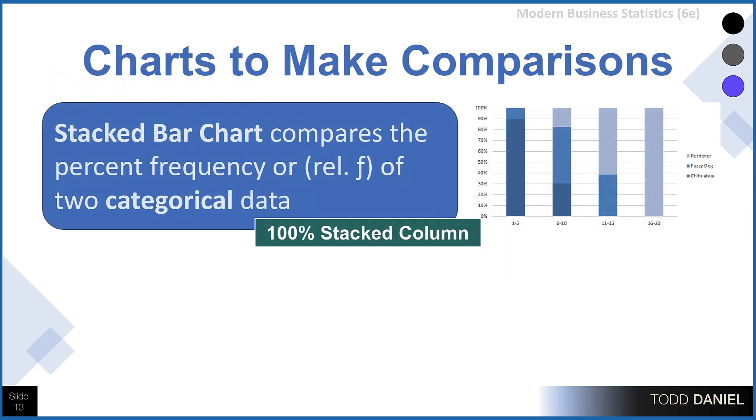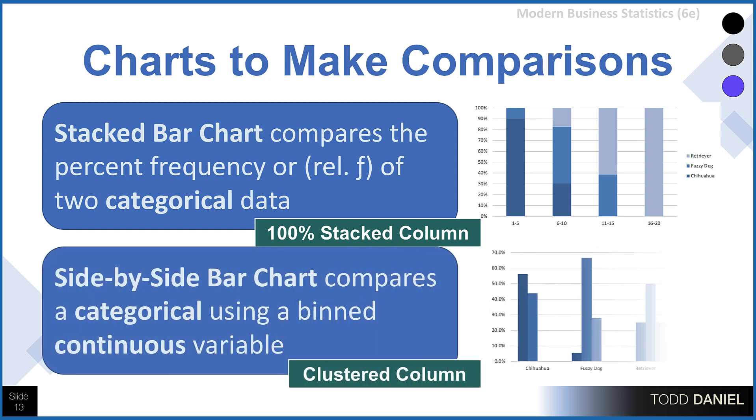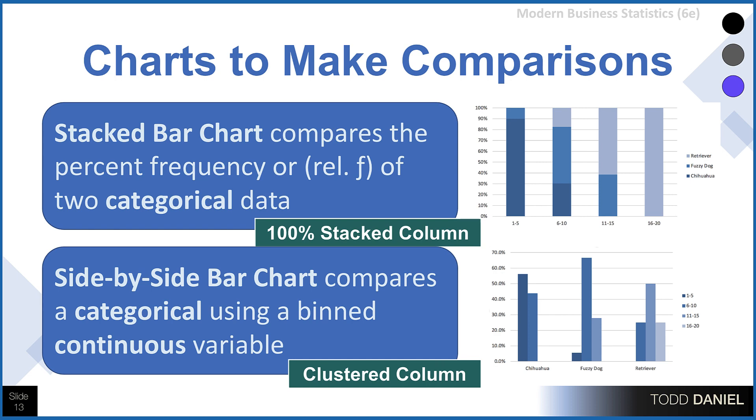When you have two variables and you want to make comparisons, you could use a stacked bar chart to compare the percent frequencies or the relative frequencies if you have two categorical variables. On the other hand, if you have one categorical variable and a continuous variable that you've grouped into bins, you might use the side-by-side bar chart. Both of these charts are created using the 100% stacked column chart option, but to create the side-by-side bar chart, you switch the columns and rows and you click on the clustered column option.